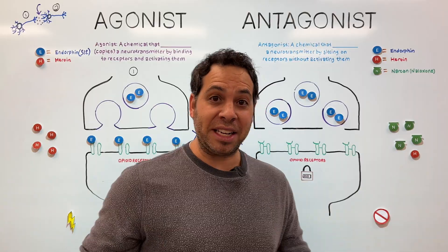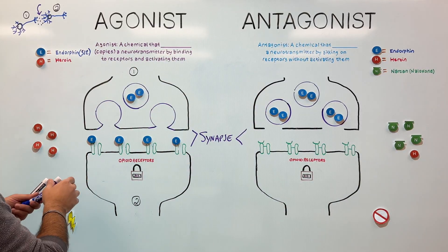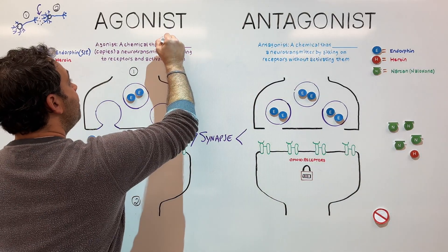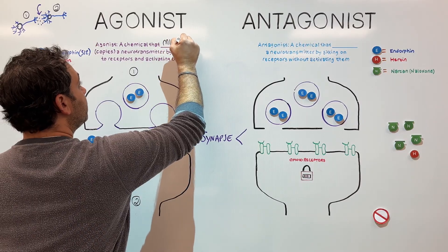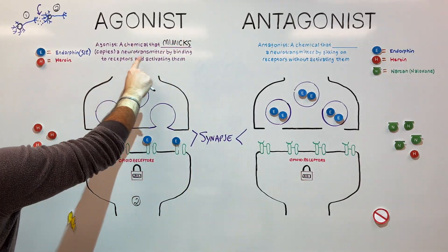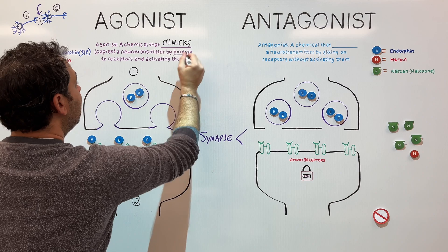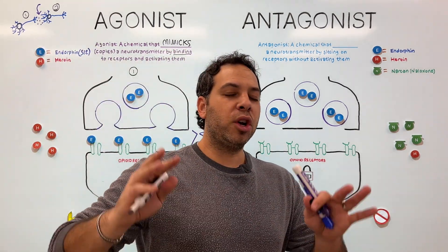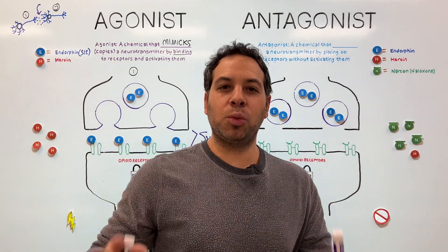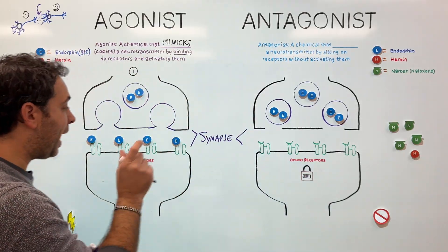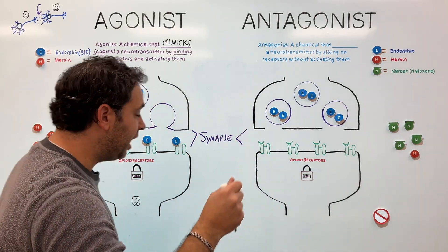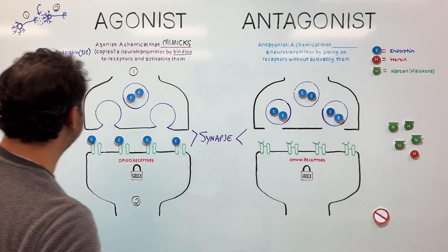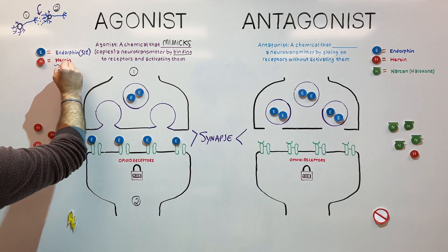So what does this have to do with an agonist? An agonist is any chemical that mimics — copies — a neurotransmitter by binding to receptors and activating them. In other words, there are drugs in this world that know the same password, have the same key, to activate the receptors as natural chemicals in the brain. Do you know what one of those is? Heroin.